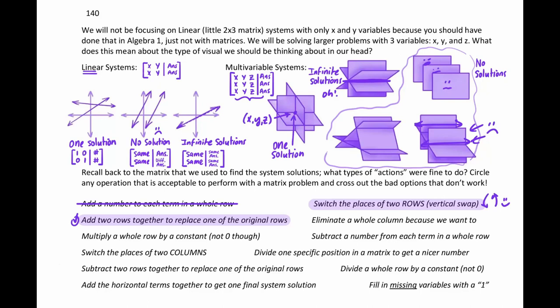Can we eliminate a whole column just because we feel like it? Well, no, that would be getting rid of a whole variable or a whole answer or a whole part of your question. That's not okay to do. The next one, can we multiply a whole row by a constant? And that would be acceptable. We can scale things up. That's sometimes how we get things to eliminate. You just don't want to multiply by zero because then you lose a whole equation.